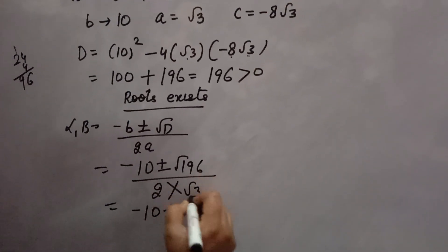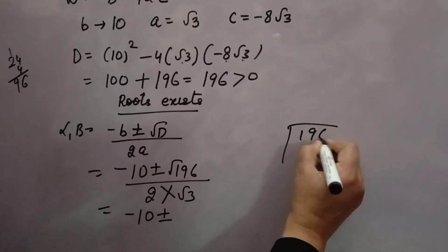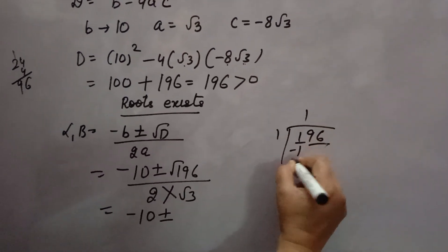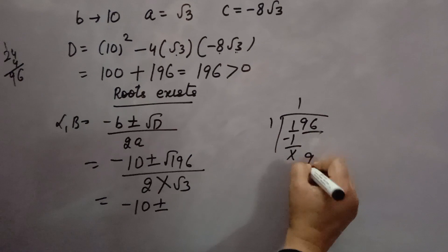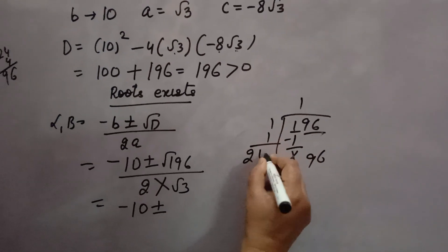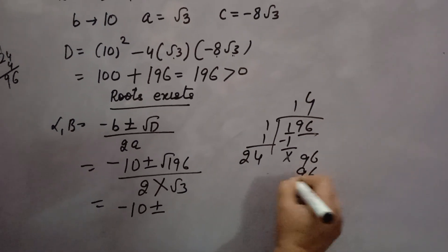Now, minus 10, under root of 196. That is 14. So, under root is 14.